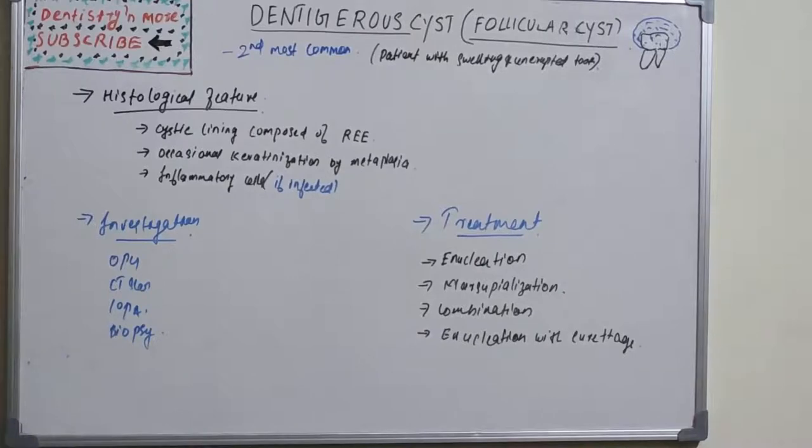Treatment options include enucleation, marsupialization, or a combination of enucleation and marsupialization. Also, curettage associated with enucleation can be performed. That's all about dentigerous or follicular cyst. Let's see the OKC or odontogenic keratocyst in the next session. Thank you.